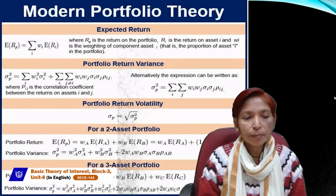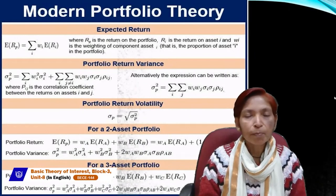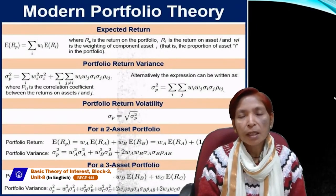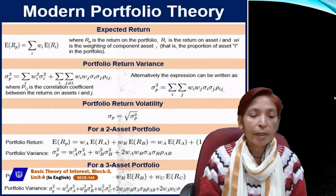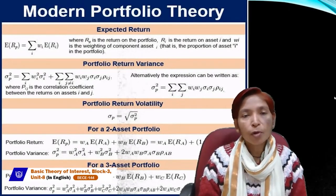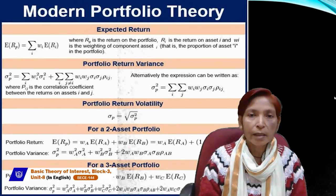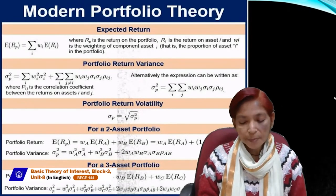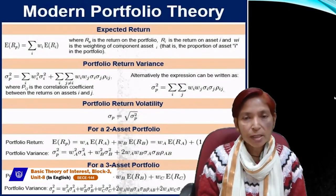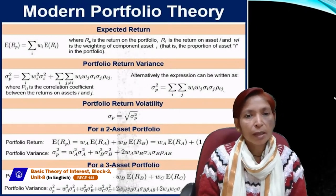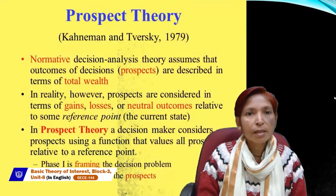For a three-asset portfolio, we can expand the expected return formula to: wa E(ra) + wb E(rb) + wc E(rc). For four assets, we further extend to include wd and E(rd). Similarly, we can expand the portfolio variance formula for three or more assets. These are the formulas for calculating expected return and variance with different numbers of assets.